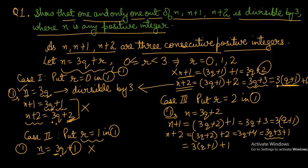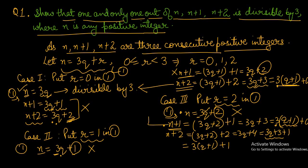Now case number 3, where r equals 2: n is equal to 3q plus 2, that means when we divide n by 3, the quotient is q and the remainder is 2 — so n is not divisible by 3. A number is divisible only if the remainder is 0. When we divide n plus 1 by 3, the quotient is q plus 1 and the remainder is 0 — so remainder 0 means this number n plus 1 is divisible by 3.